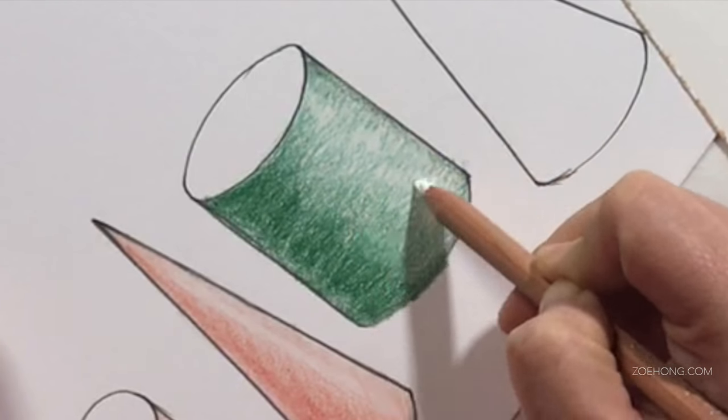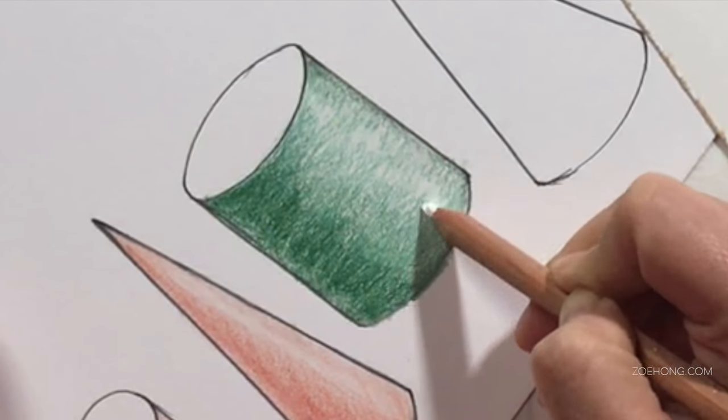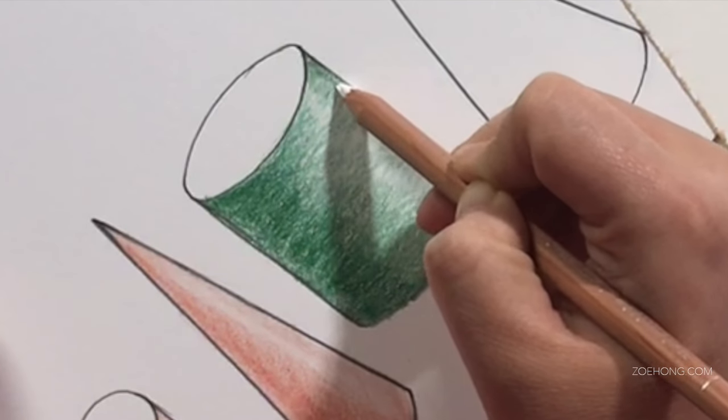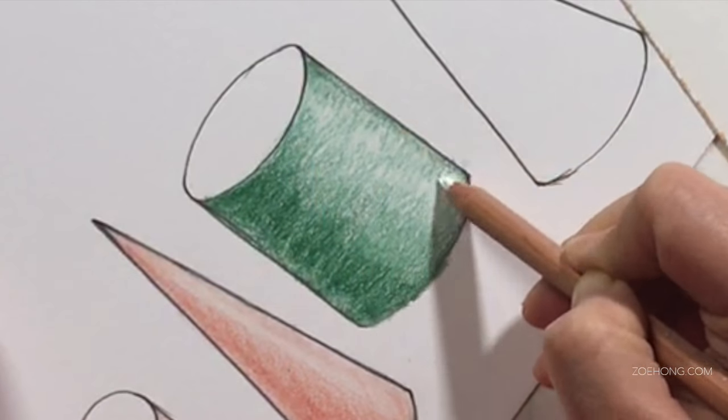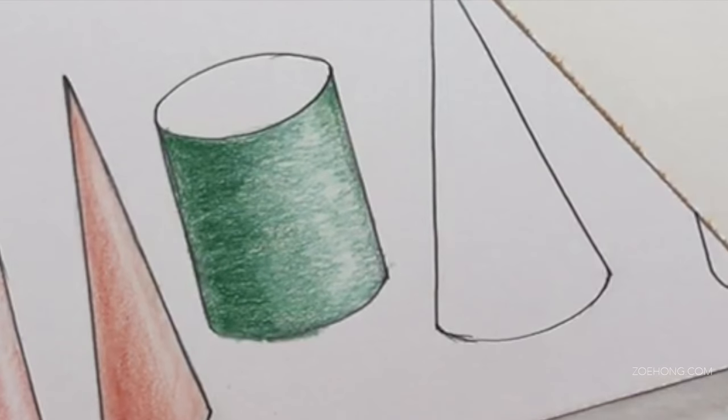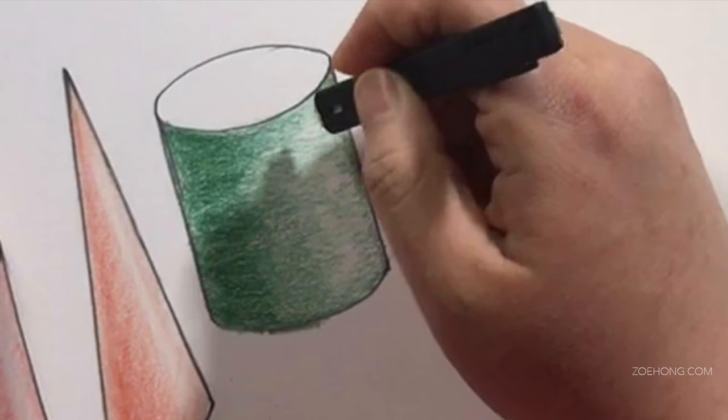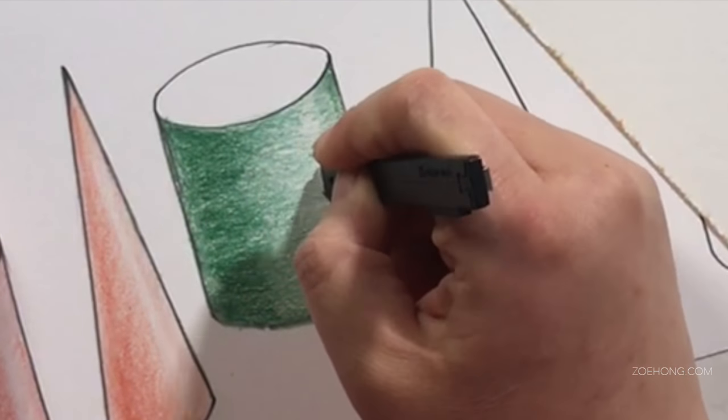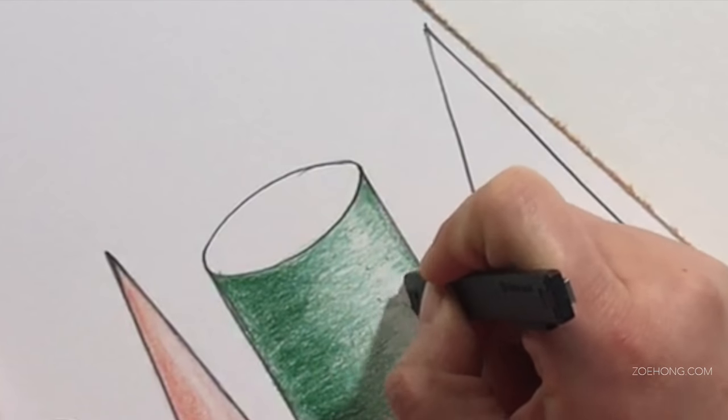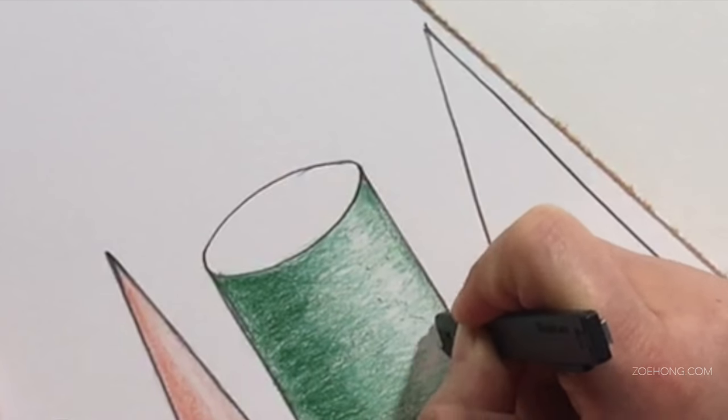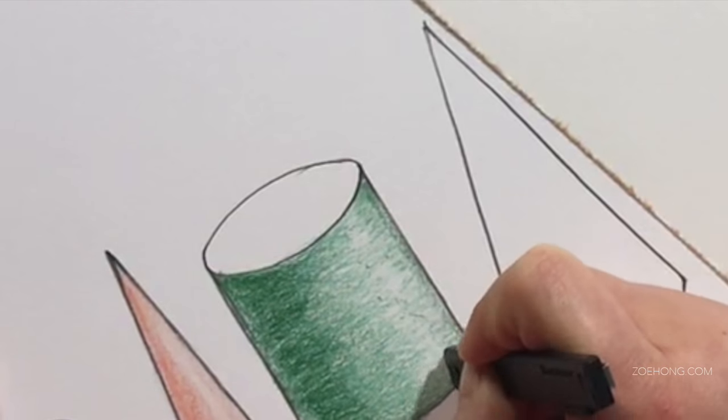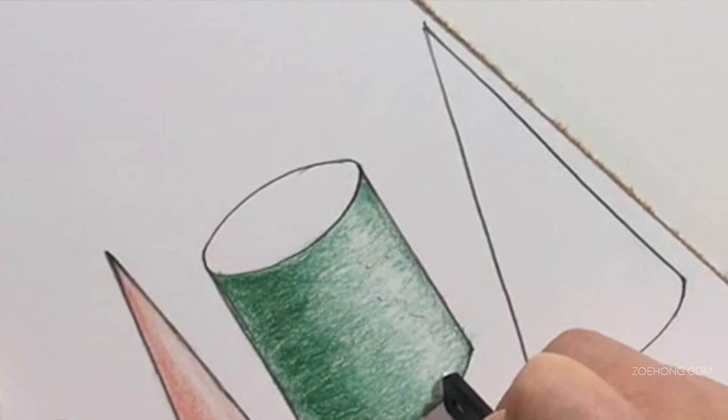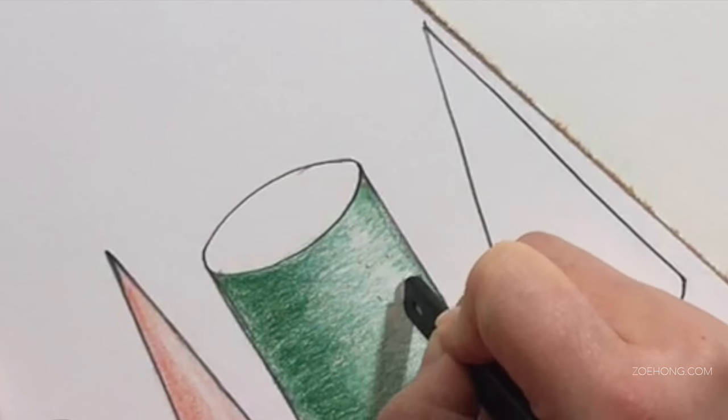One way to smooth out some of the graininess while keeping things pretty light on this side is to take a white colored pencil and kind of burnish slash blend that side in, softening some of that grain while retaining some of the original texture.